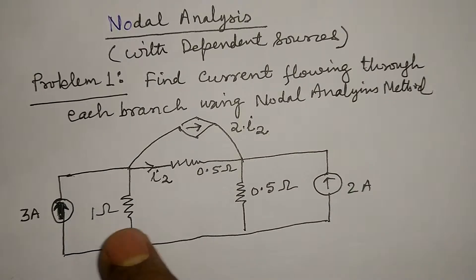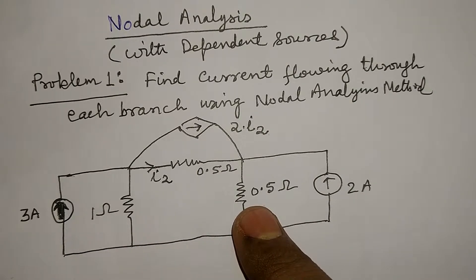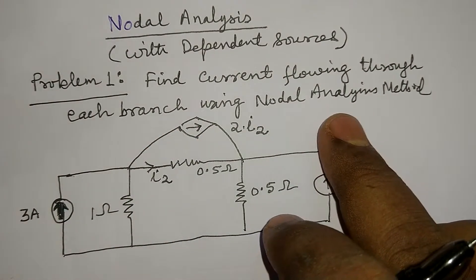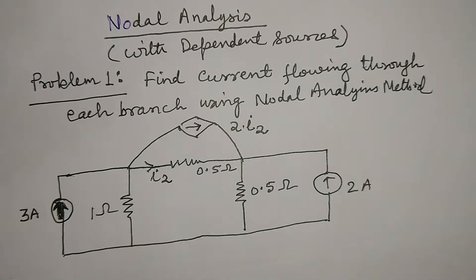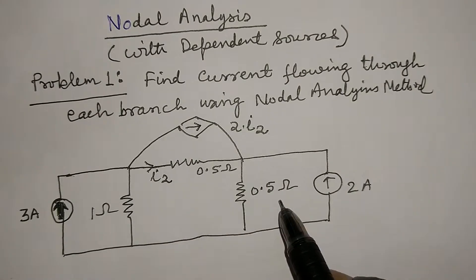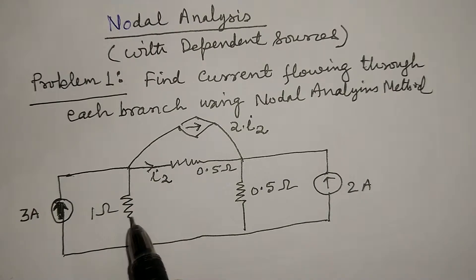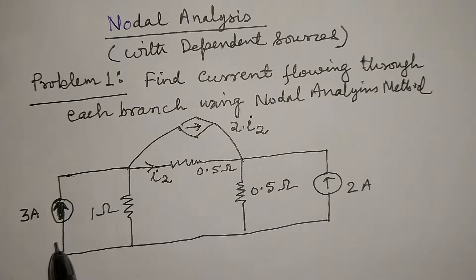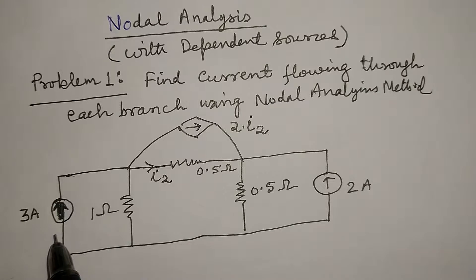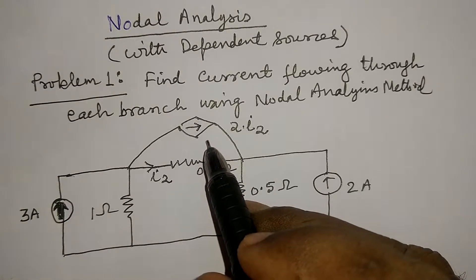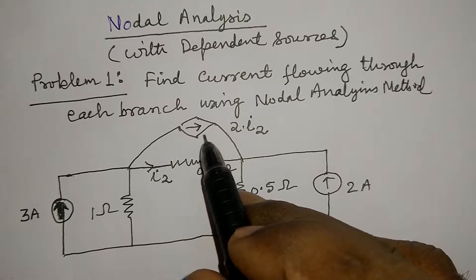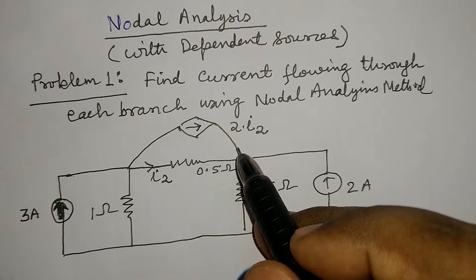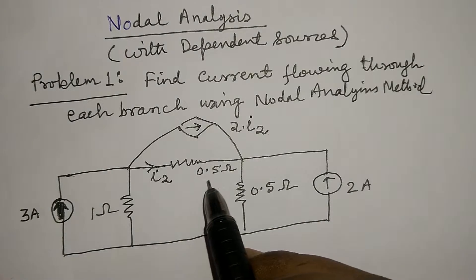For this, I have considered a circuit. In this circuit, I have to calculate current in each branch using nodal analysis method. The circuit consists of three resistances: 1 ohm, 0.5 ohm, and 0.5 ohm. This circuit diagram consists of two independent current sources, 3 ampere and 2 ampere, and one dependent current source which depends upon current I2 flowing in the 0.5 ohm resistance.